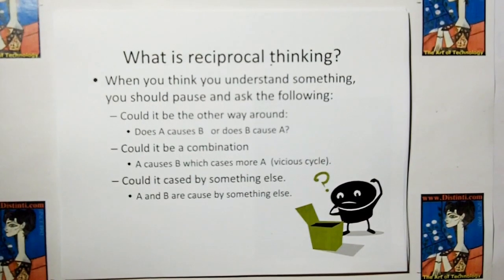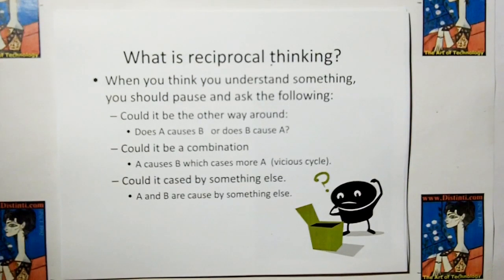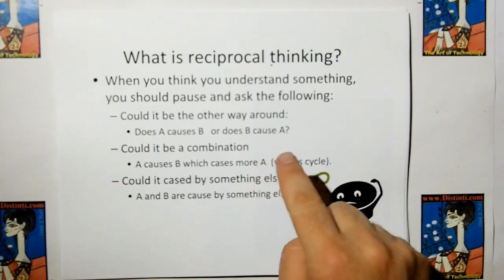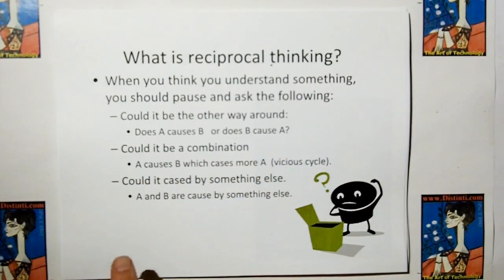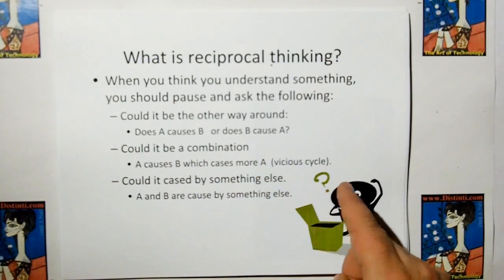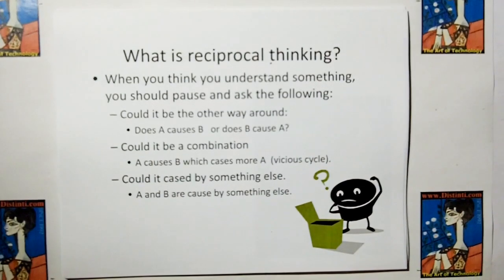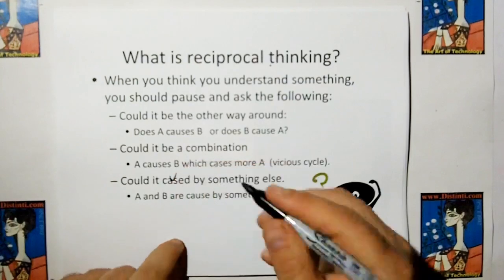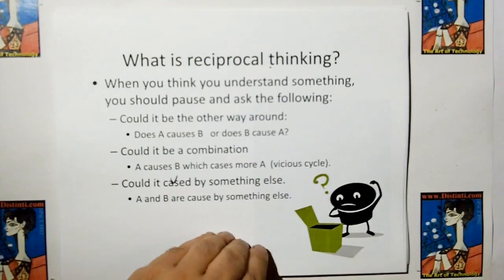So what's reciprocal thinking? Well, when you think you understand something, you should pause and ask yourself the following. Could it be the other way around? Does A cause B or does B cause A? Could it be a combination? In other words, A causes B, which then causes more A, a vicious cycle? Or could it be caused by something else? In other words, well, we'll cover examples.